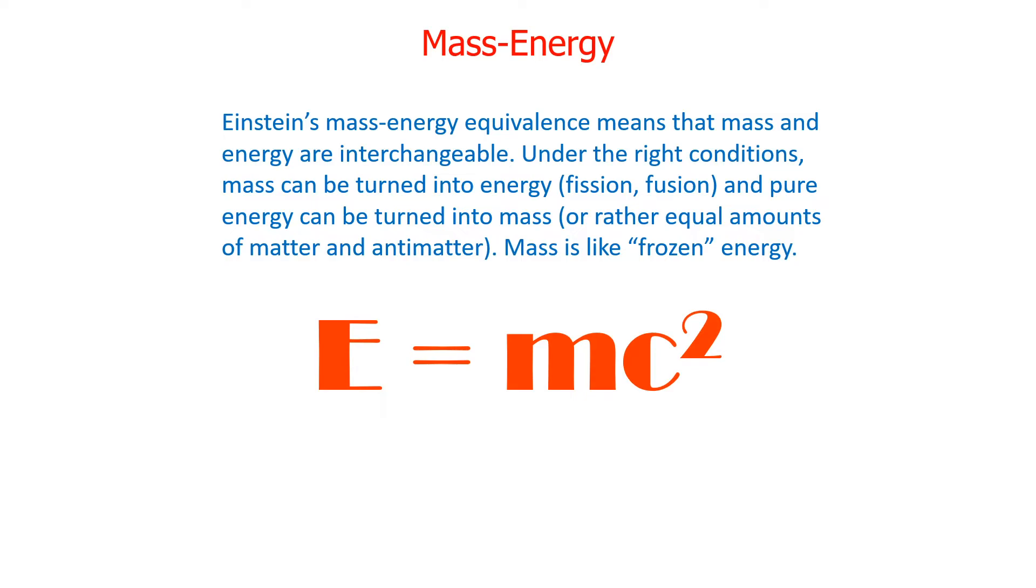Also, we have the fundamental equivalence given to us by Einstein's theory that E equals mc squared, where a small number, an amount of mass, is multiplied by a huge number, or c squared, to get a big number. Mass and energy are interchangeable. Under the right conditions, mass can be turned into energy, fission and fusion are examples, and pure energy can be turned into mass, or in the physics lab, equal amounts of matter and antimatter. So we should think of mass as frozen energy.